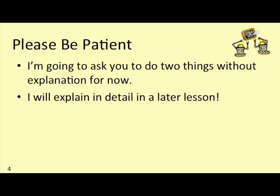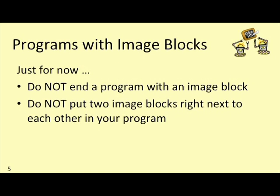In order to avoid some common problems that crop up when beginners start writing robot programs, I need to ask you to do two things I'm not going to fully explain right now. Be assured we'll cover both in detail very soon. First, just for now, don't end a program with an image block. Also, just for now, don't put two or more image blocks right next to each other in your program. In an upcoming lesson I'll explain what's going on, and you'll be able to do anything you want with image blocks. But for now, if you run a program that includes either of these, you may find the robot's behavior very confusing.